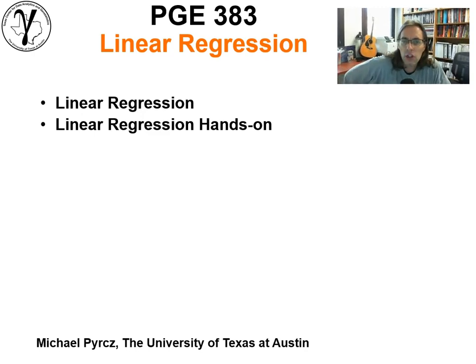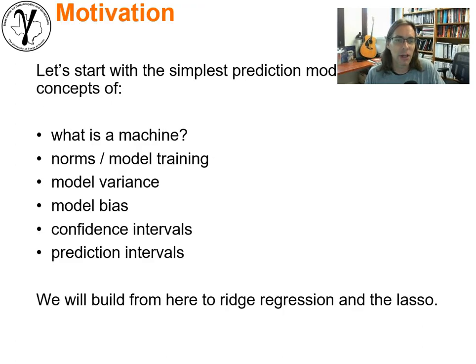Hey, howdy everyone. I'm Michael Perch, an associate professor at the University of Texas at Austin. Now we're going to have a continuing series on machine learning. We'll talk about the very first prediction-based machine, linear regression. I know it doesn't sound great, but let's see. It's going to be a good discussion.